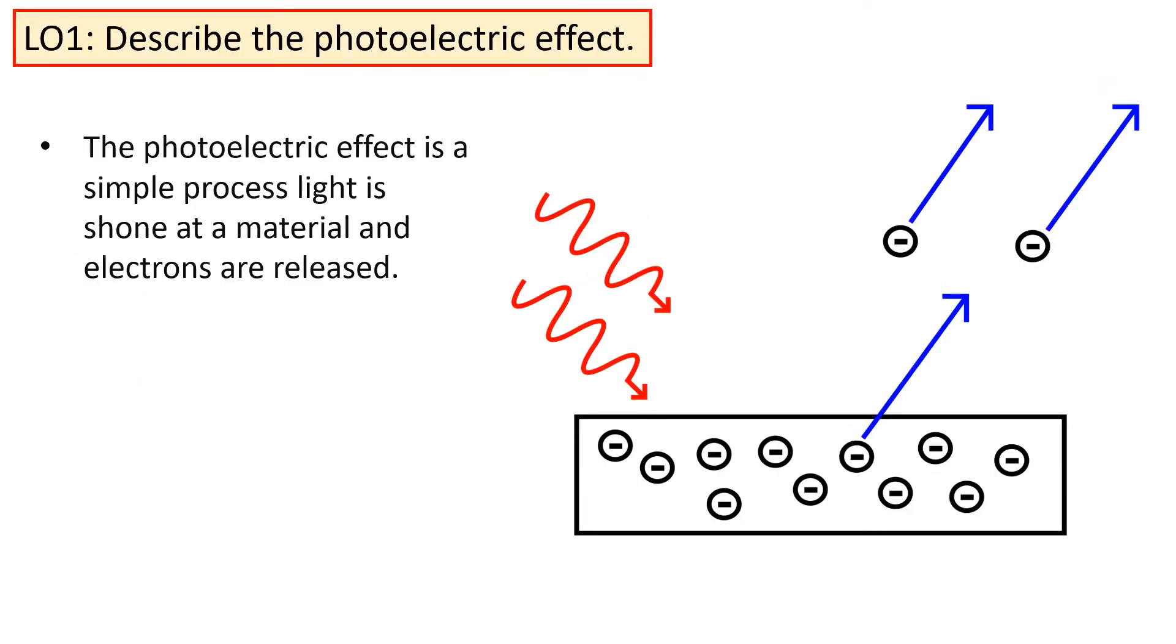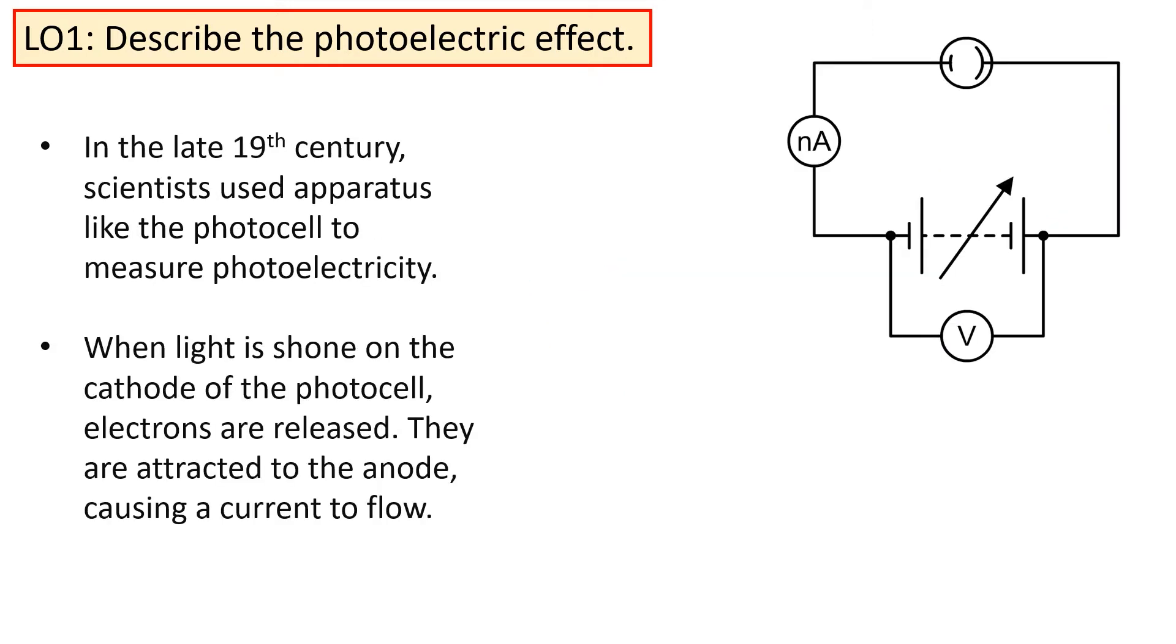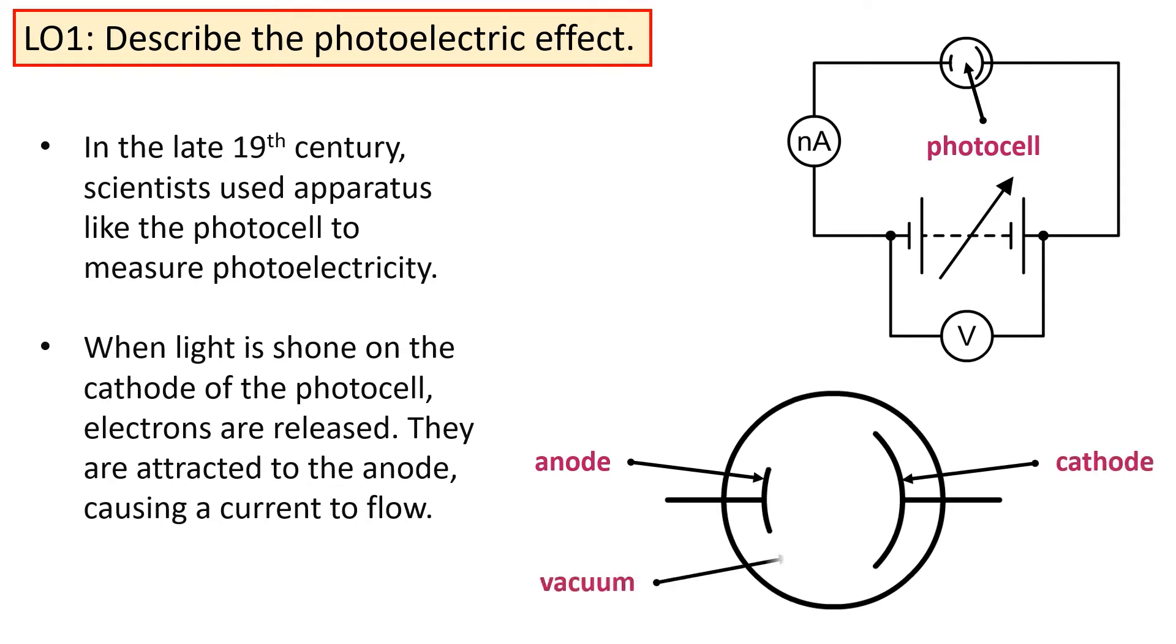Very simply, the photoelectric effect occurs when light is shone at certain materials. These materials will eject electrons from their surface after the light has been incident upon them. It was discovered in the late 19th century. Scientists used a set of apparatus called photocells. Photocells are very simple. They're made up of an anode and a cathode with a vacuum in between. The light shone at the photocell caused electrons to be released. This was detected as it caused a small current to start flowing inside the circuit.